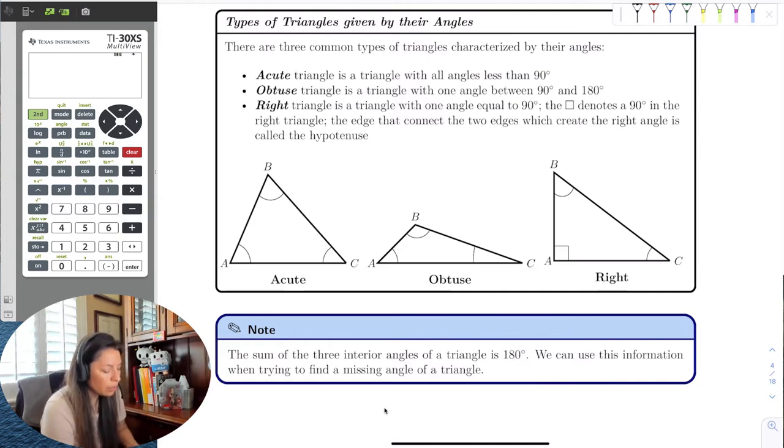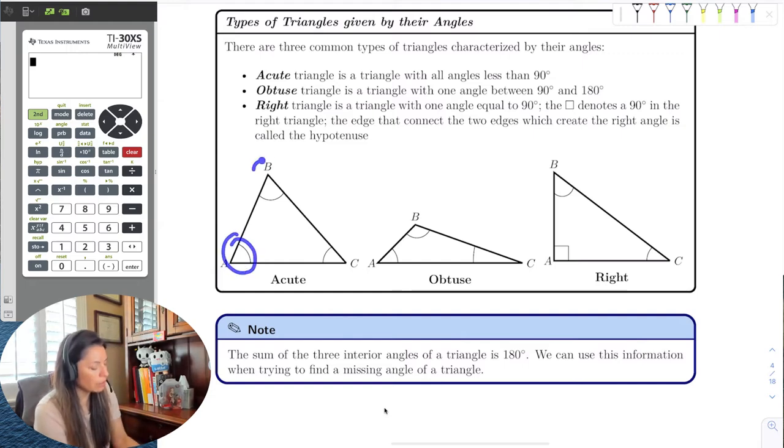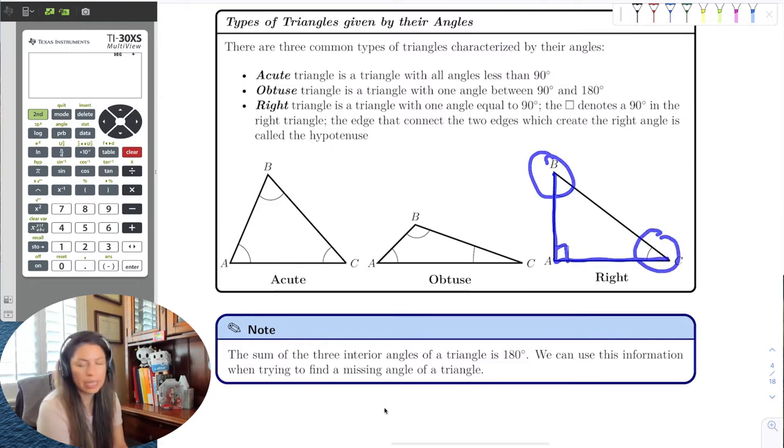So an acute triangle is exactly what you think. It's just all the angles of the triangle are less than 90 degrees. And obtuse means one of the angles is obtuse, so one of the angles is larger than 90, but less than 180. The right angle is exactly what you think, that one angle has to be 90 degrees, and then the other two can be different.